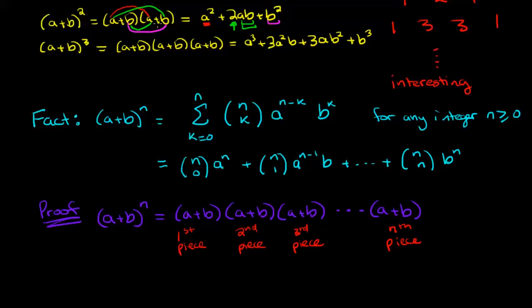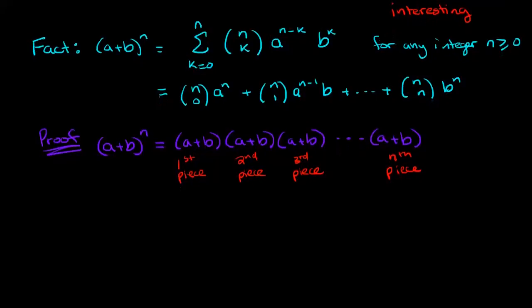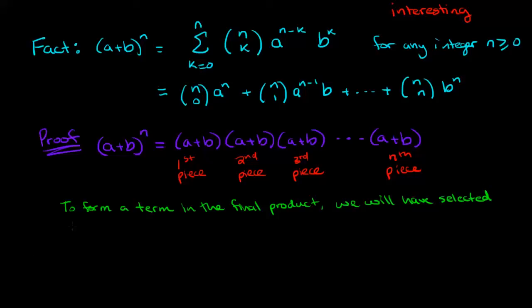So what we've learned from looking at this is that in each of the pieces we can select either the a or the b to end up in the final product. So what we've learned is that to form a term in the final product we will have selected either an a or b from each of the n pieces.